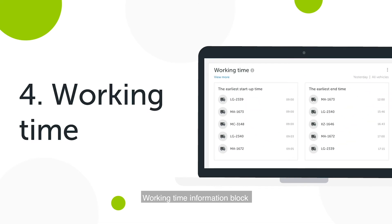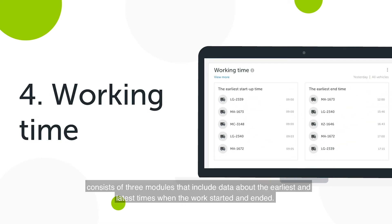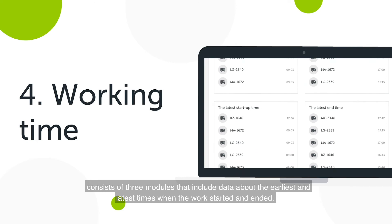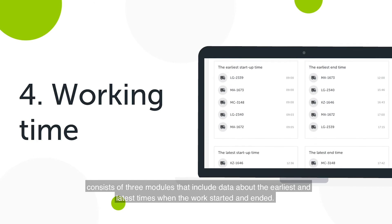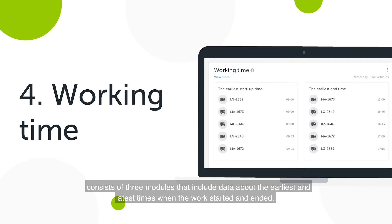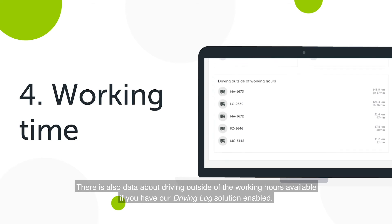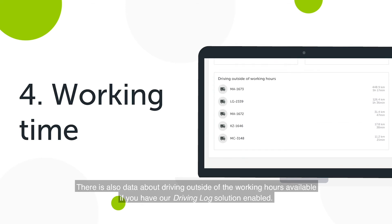Working Time Information Block consists of three modules that include data about the earliest and latest times when the work started and ended. There is also data about driving outside of the working areas available if you have our driving log solution enabled.